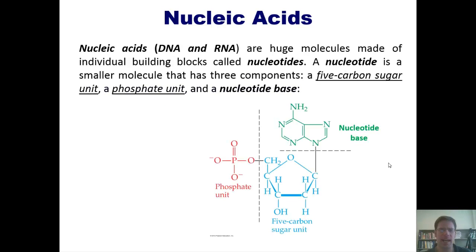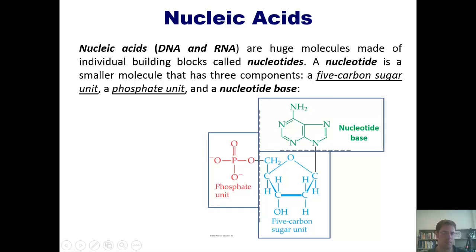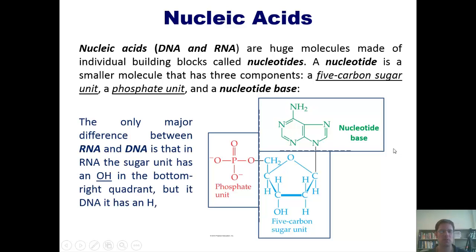Now, nucleic acids, DNA and RNA, are huge molecules made of individual building blocks called nucleotides. A nucleotide is a smaller molecule that has three components: a five-carbon sugar, put in this cute little blue square, a phosphate unit, shown over here, and a nucleotide base, shown up here. So the only major difference between RNA and DNA is that in RNA, the sugar unit has an OH right here at this position, while in DNA, it has a hydrogen.